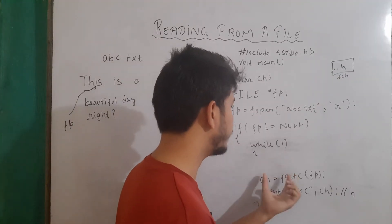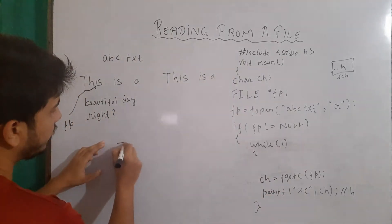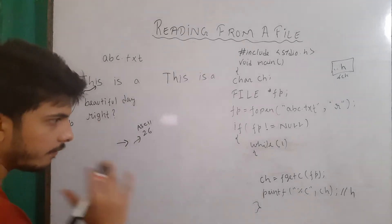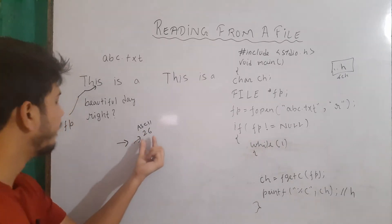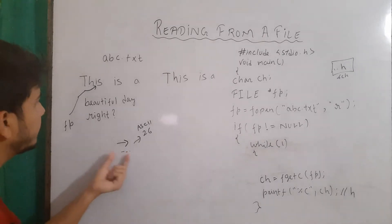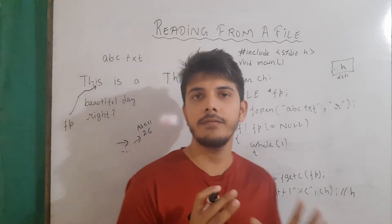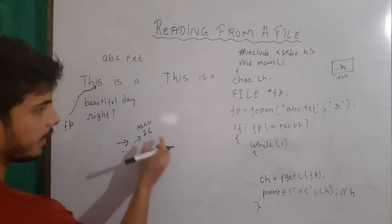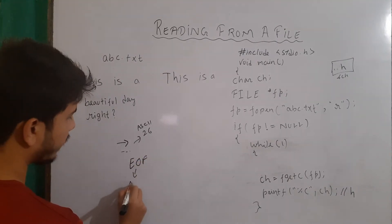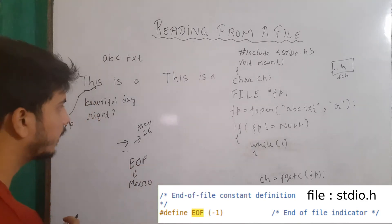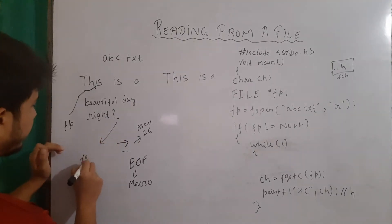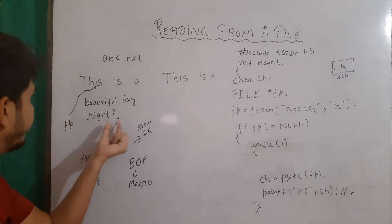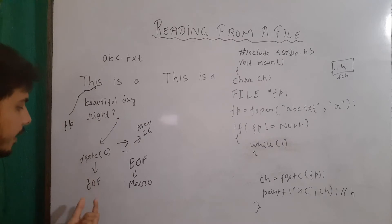But there is one problem: this loop will never end. Remember that whenever a file ends, a special character with ASCII value 26 is written in the file. So we have to stop the reading process when we reach that character. When fgetc reads that end-of-file character, it returns EOF, which is a macro whose full form is End Of File. So instead of returning that particular character, fgetc returns EOF.